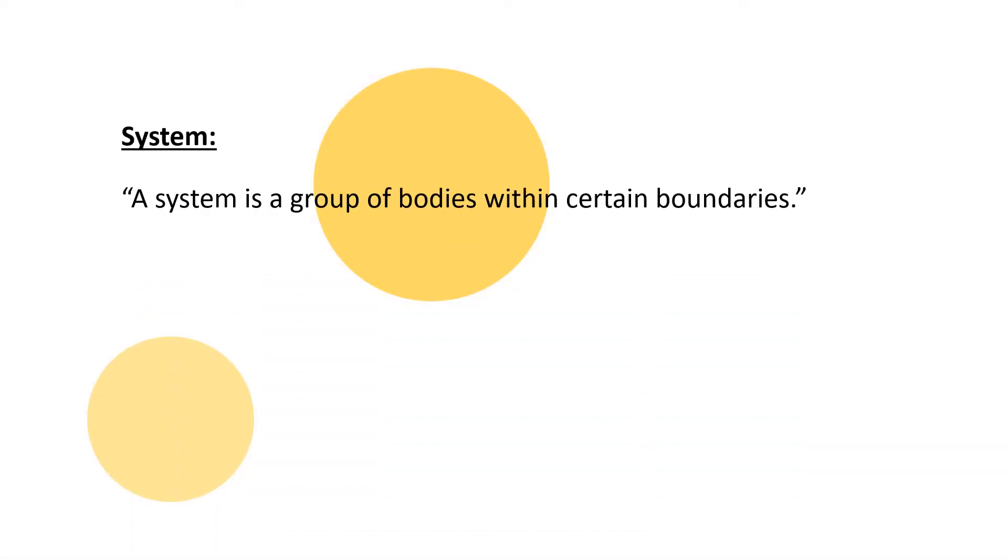System. We are talking about momentum to conserve, so first we need to know what is a system. System is that there are groups of bodies within certain boundaries. In a boundary, there are some things that work. For example, we talk about a house. There are four different boundaries and there is a house that is a system.